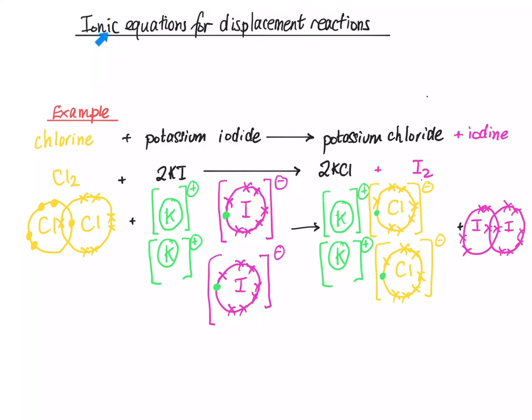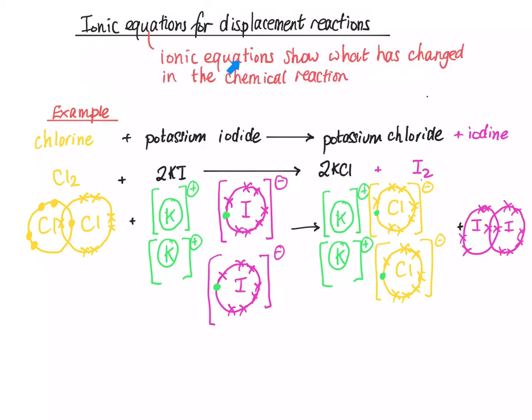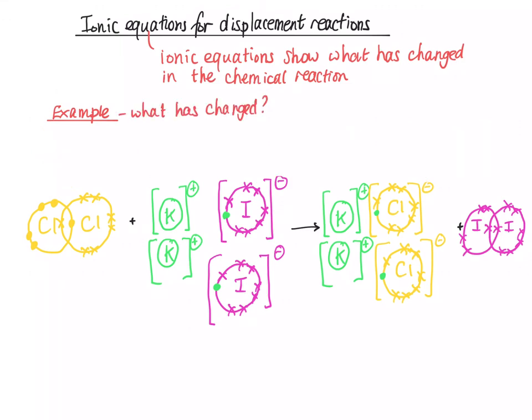One of the common questions you see in exams is, what would be the ionic equation for this displacement reaction here? And ionic equations show what has changed in the chemical reaction. So, what has changed? Well, over here, the K⁺ stays as K⁺ when it goes to this side, so the K⁺ doesn't change. The Cl₂ starts as Cl₂, but ends as Cl⁻, so the yellow has changed, and the I⁻ goes to I₂. So, the green K⁺ doesn't change, but the yellow and the purple do. So, if you rub out the green, what we see is this.